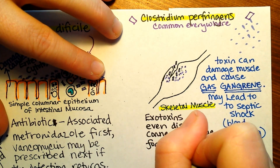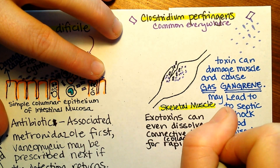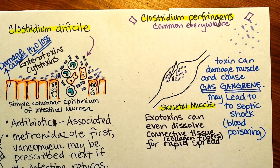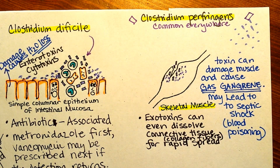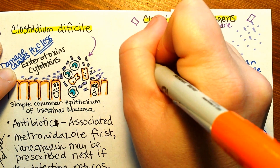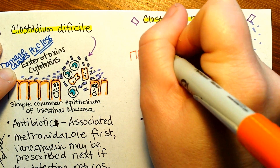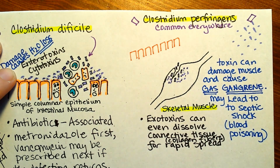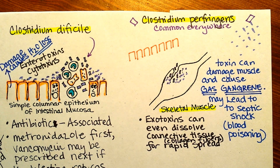When I say connective tissue, I usually mean collagen fibers. The exotoxins can also cause food poisoning. Clostridium perfringens is actually a fairly well-known cause of food poisoning, just like Clostridium botulinum — but it doesn't make a neurotoxin, so it doesn't cause the paralysis of Clostridium botulinum.